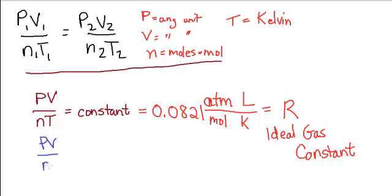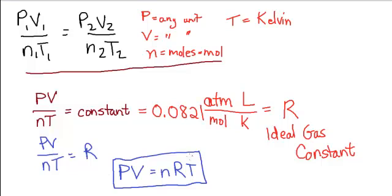Now we don't usually see this equation written like this. This would be PV over NT equals R. Usually we see it expressed as PV equals NRT. Mathematically, I think you can see I multiplied both sides by the N and the T, and I just did a little rearranging over here. Why?